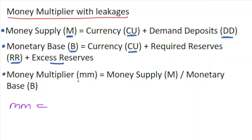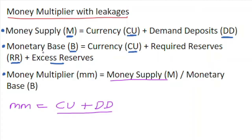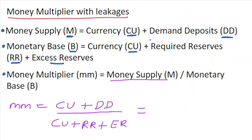We can rewrite the money multiplier in full. The money supply is CU (currency) plus DD (demand deposits), and that is all divided by the monetary base, which is CU plus the reserve requirement (RR) plus the excess reserves (ER).